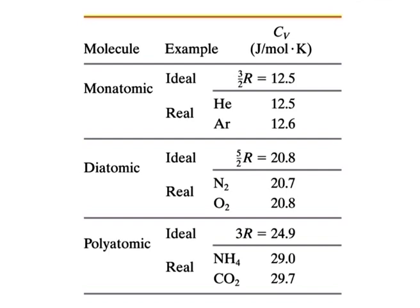Degrees of freedom and molar specific heats. The experimental values show that the prediction of kinetic theory for ideal gases agrees very well with experiment for real monoatomic gases, that is Cv = (3/2)R. The predicted and experimental values of Cv for diatomic gases and polyatomic gases are greater than those for monoatomic gases. Let us try to explain this discrepancy by considering that molecules with more than one atom can store internal energy in forms other than translational kinetic energy.